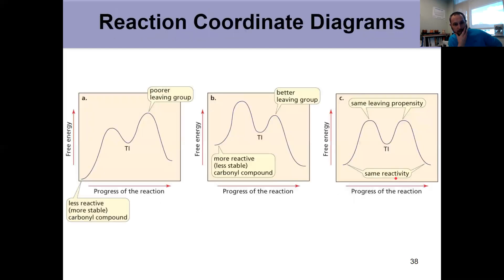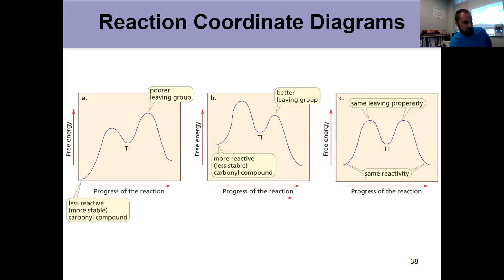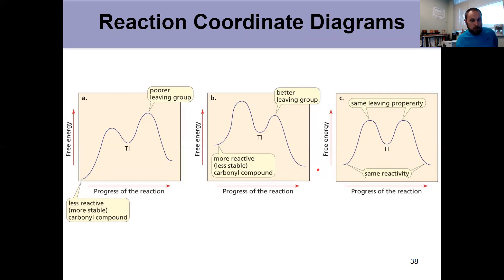The reaction coordinate diagram summarizes this: only the reaction going from a less stable, more reactive carbonyl to something more stable and less reactive is the one that proceeds. That's the only direction that works for us.